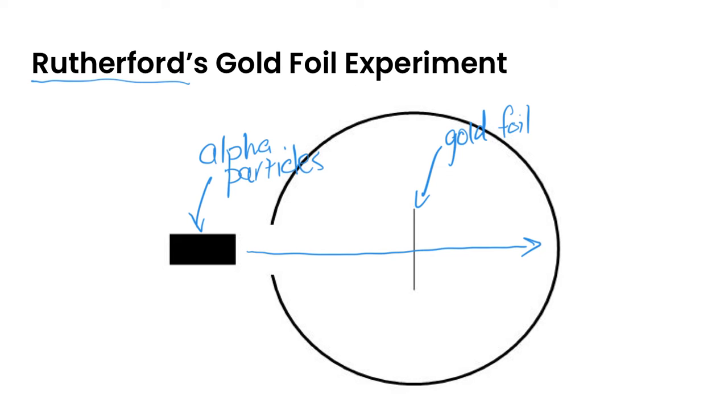These alpha particles are positively charged. When he did this experiment, what he saw was that most of the time they did go straight through, but sometimes they went off on a bit of an angle, or sometimes they actually deflected back and hit the back of the material instead. This was a big surprise.